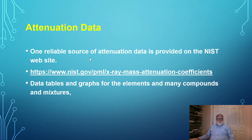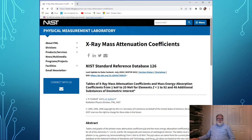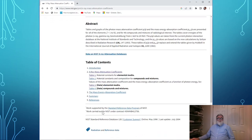We've talked about the attenuation coefficient and energy transfer coefficient. Where can we get data to use them in problems? One reliable source is the NIST website — the National Institute of Standards and Technology. They have data tables and graphs for elements and many compounds and mixtures that provide attenuation data. If you go to that address, this is what the web page looks like. It presents mass attenuation coefficients. Scrolling down, you'll see links about x-ray or photon mass attenuation coefficients, and a description of all the concepts explained so far.